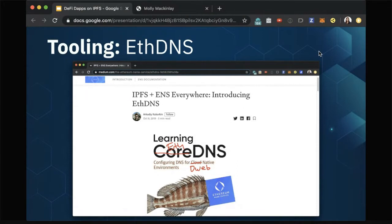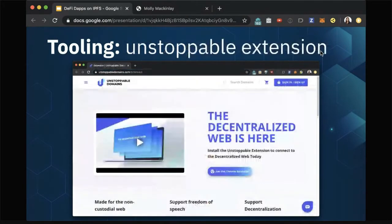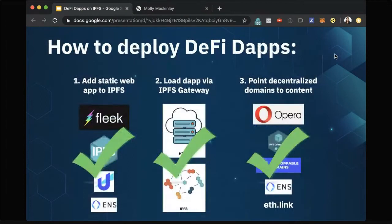A similar piece of tooling is the Unstoppable extension, which also allows you to resolve to an HTTP gateway or a local gateway if you're running a local node. It also does resolution of .crypto or .zil TLDs. So now you've added your static web app to IPFS, loaded your dApp via the gateway, and have a decentralized way to point domains to the content you care about.